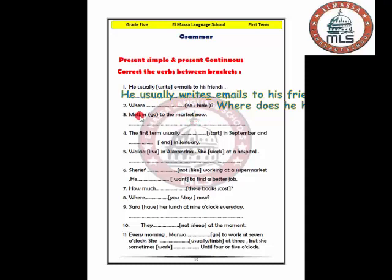Mother, a singular noun, followed by is plus verb plus ing. Present continuous is the rule that is formed by using am, is, are plus verb plus ing. So mother is going to the market now. Number four: the first term usually starts in September. This is a fact. Term, a singular noun, we use s: starts in September and ends in January.